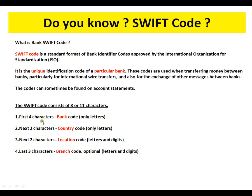The first four characters are the bank code — letters only. The next two characters are the country code — letters only. The next two characters are the location code — letters and digits. The last three characters are the branch code, which is optional. Hope this information about SWIFT code is useful. Thank you.